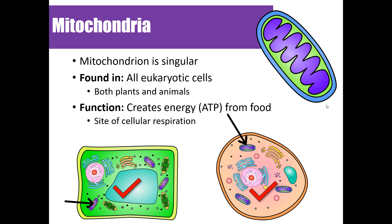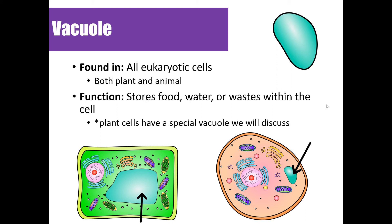Vacuoles are found in both plant and animal cells, but they look different between the two. In animal cells, vacuoles are small and numerous. In plant cells, there's one large central vacuole. Both types function to store food, water, and waste within the cell.